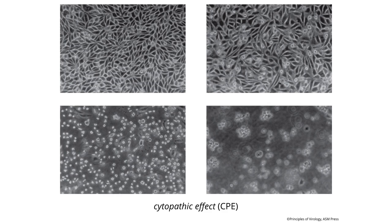Here's an illustration of CPE using a mouse cell line into which we've put the cellular receptor for poliovirus — making them susceptible and permissive. At two hours, four hours, and eight hours after infection, you can see the cells looking progressively different. In the unaffected monolayer, cells are flat and touching. After infection, cells round up and detach as the virus kills them, and eventually many break open as the virus comes out.